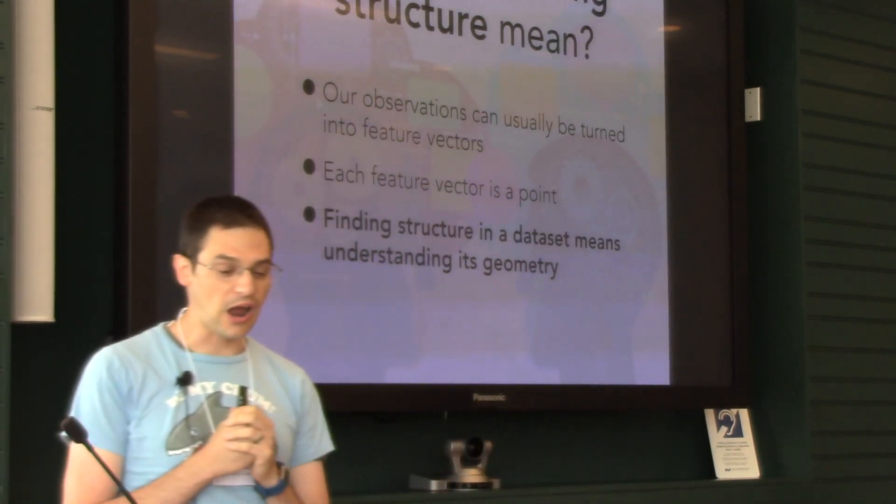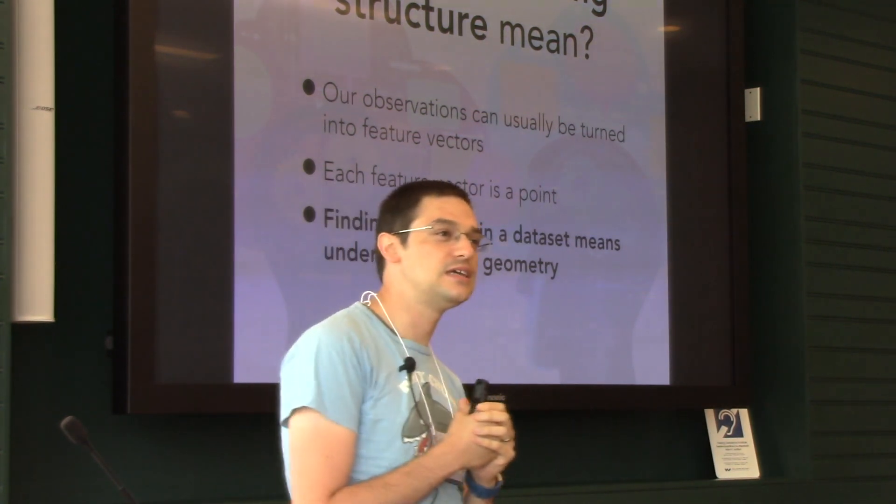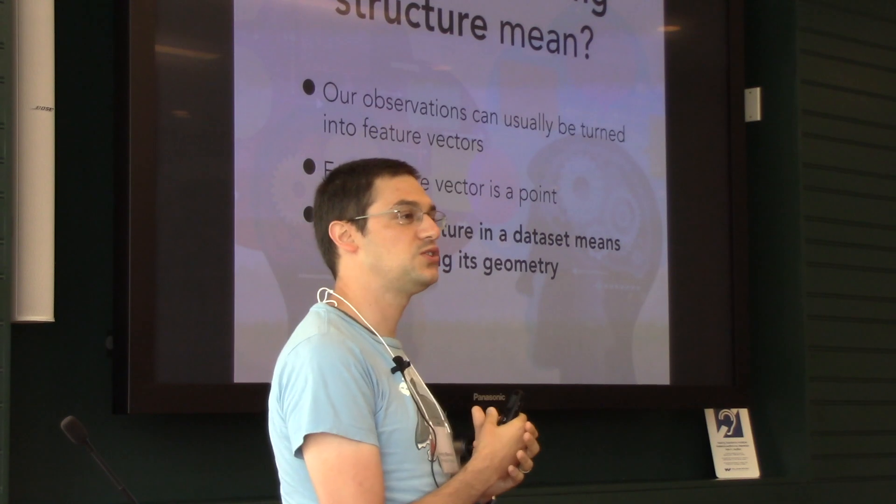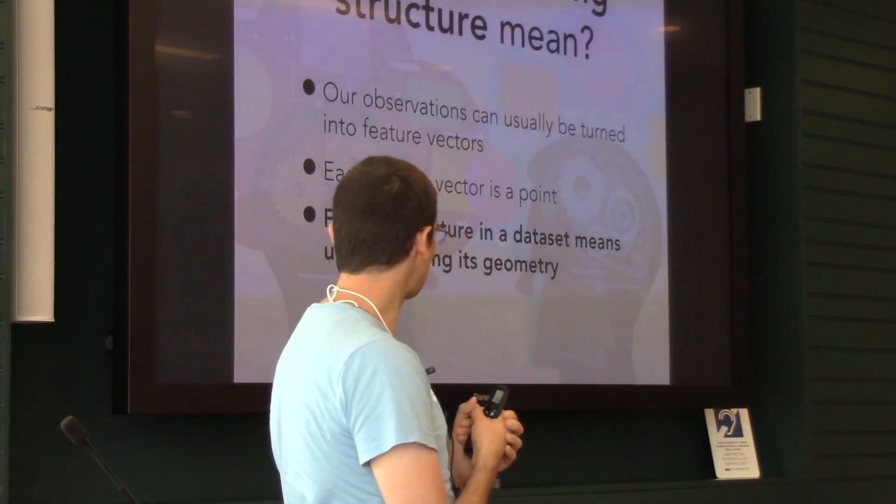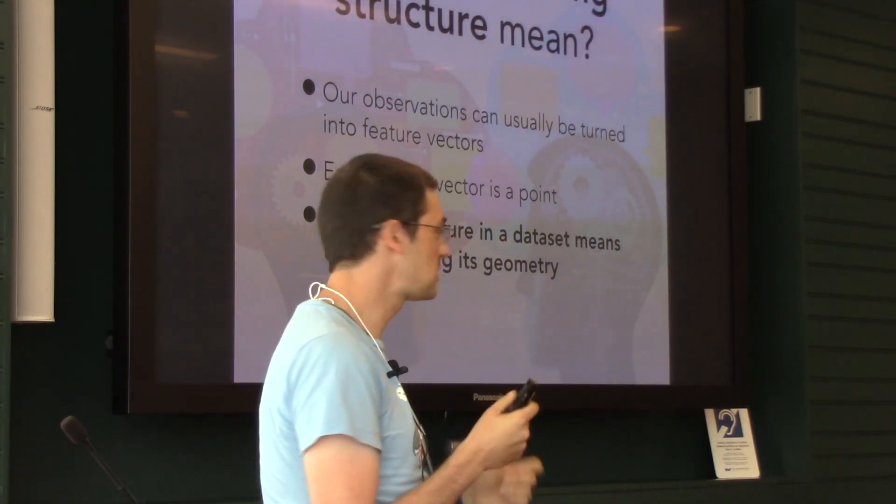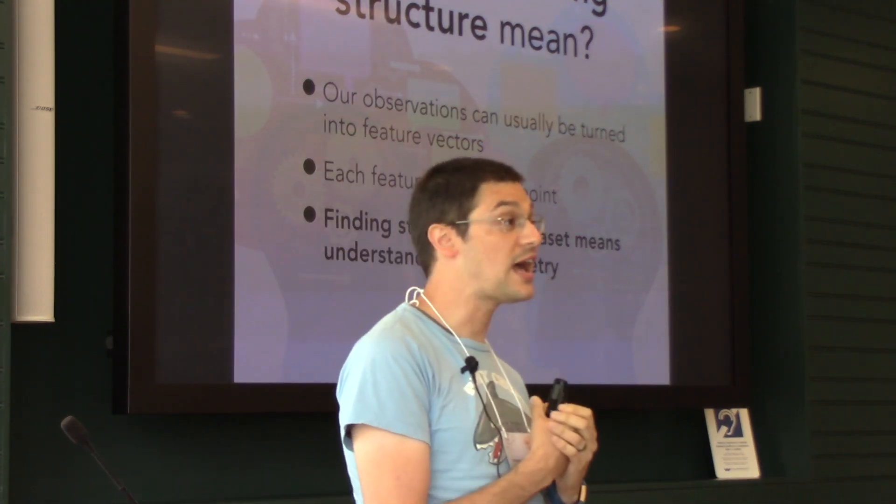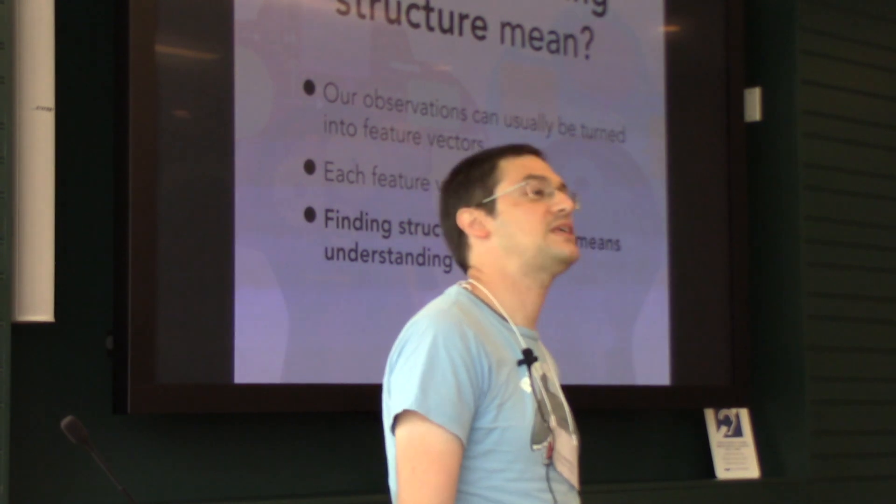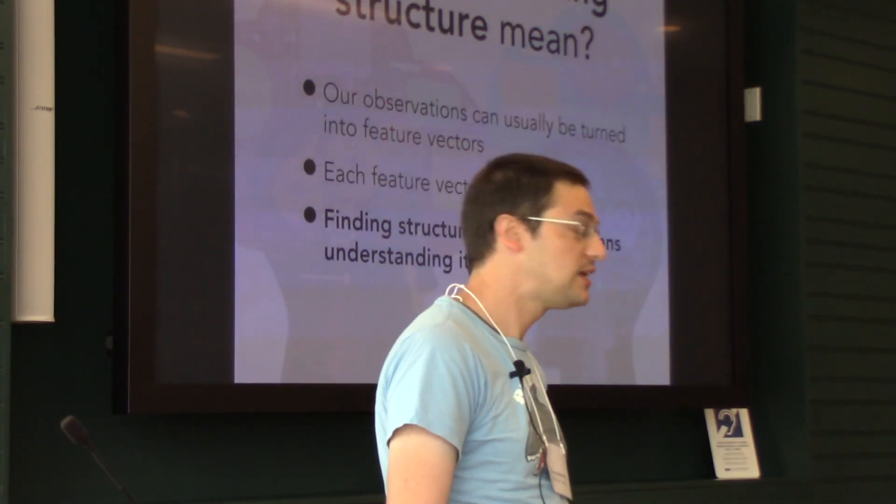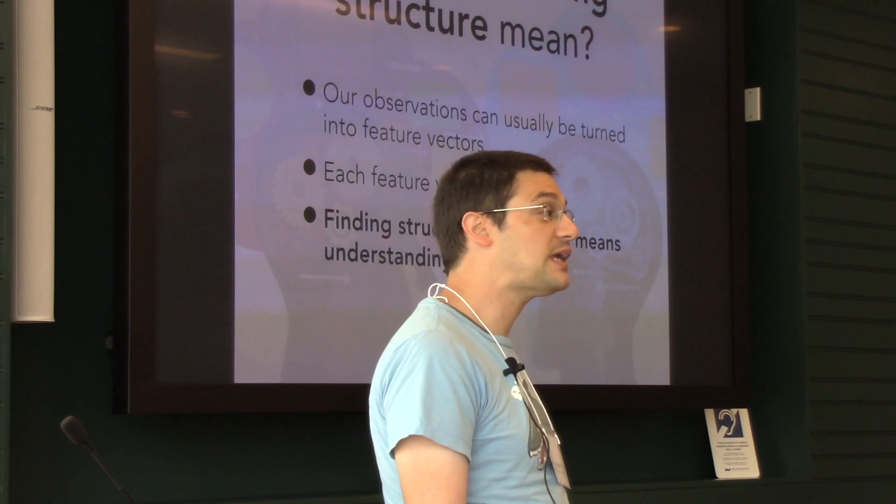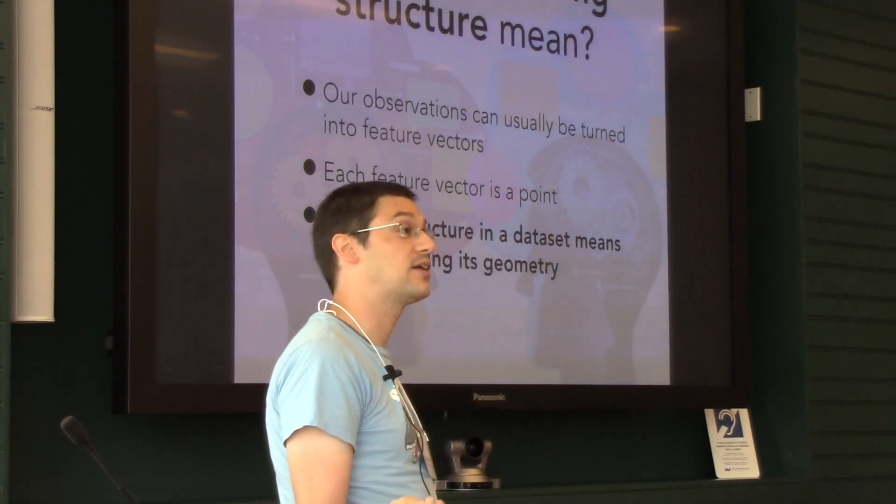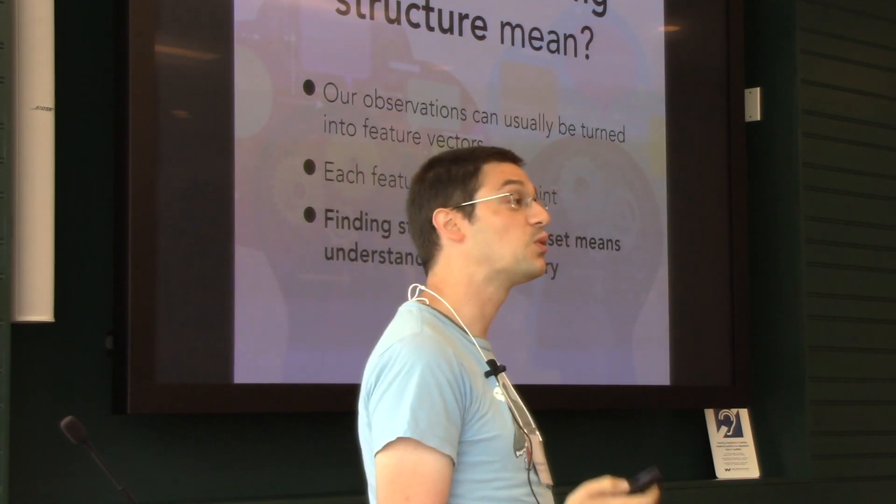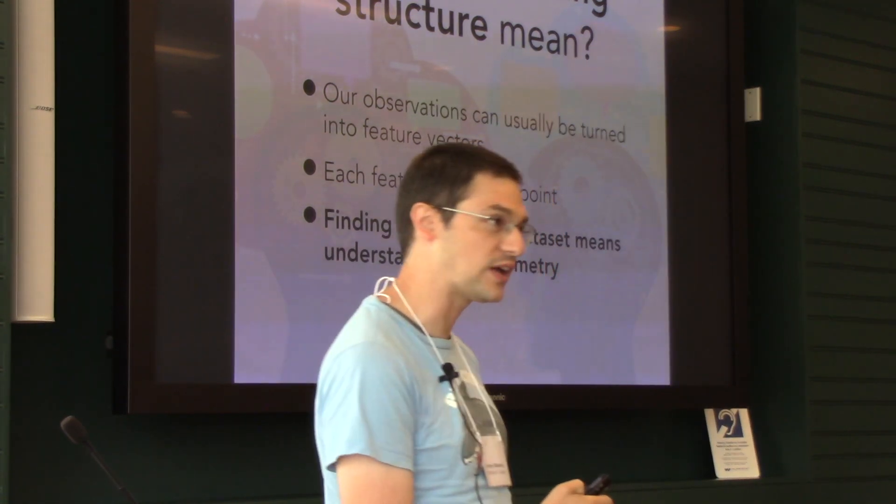The data we work with can be coerced into feature vectors—vectors of numbers. You can think of each feature vector as a point in some space. From this geometric standpoint, finding structure in data means finding geometric patterns. That's not the only way to describe finding structure, but it is one way.